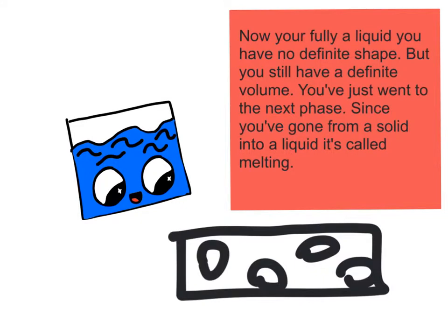Oh my gosh, what's happened to me? I've turned into a — well, right now you've turned into a fully liquid. Now you have no definite shape, but you still have a definite volume. You've just gone to the next phase. Since you've gone from a solid to a liquid, it's called melting. And here's a diagram of your particles. They have more intermolecular distance in between them, which means they have more space to move around.